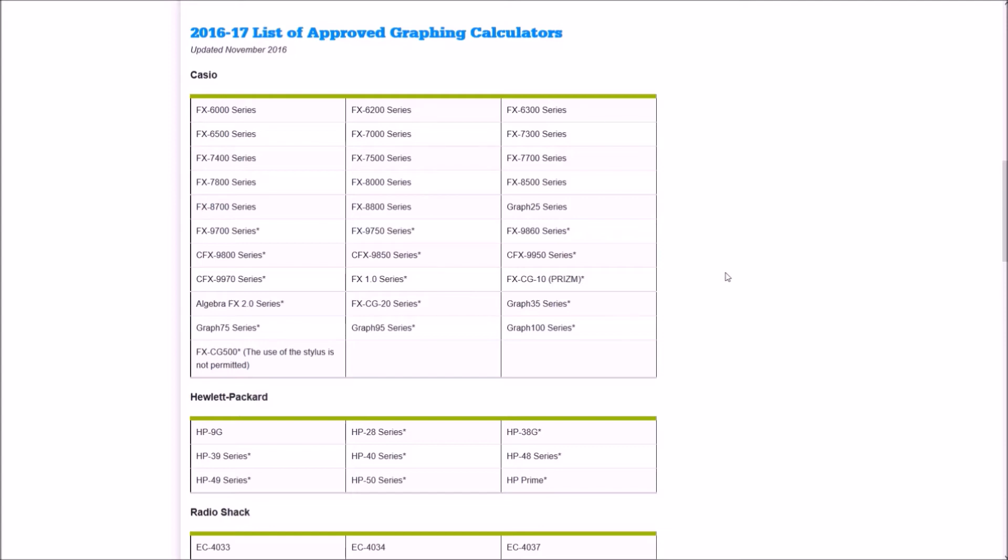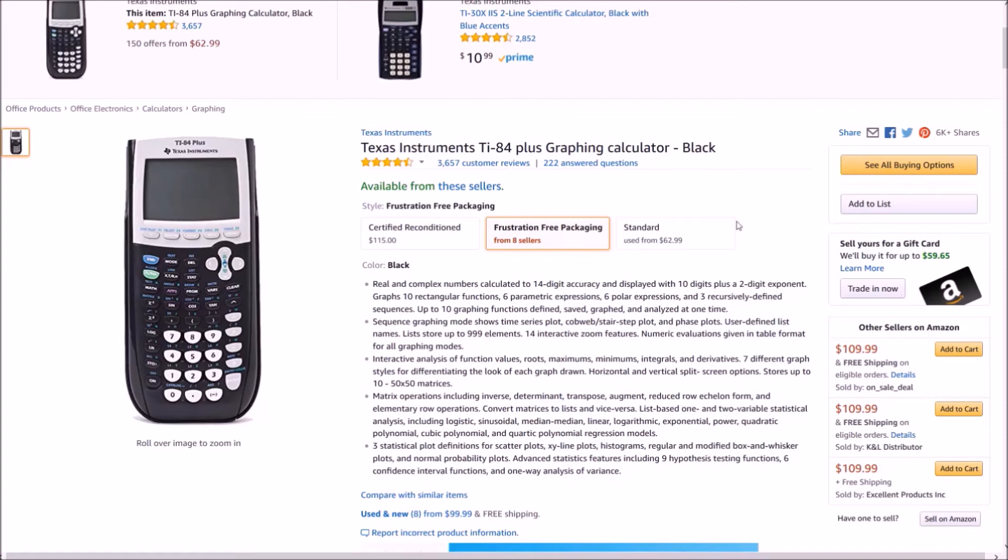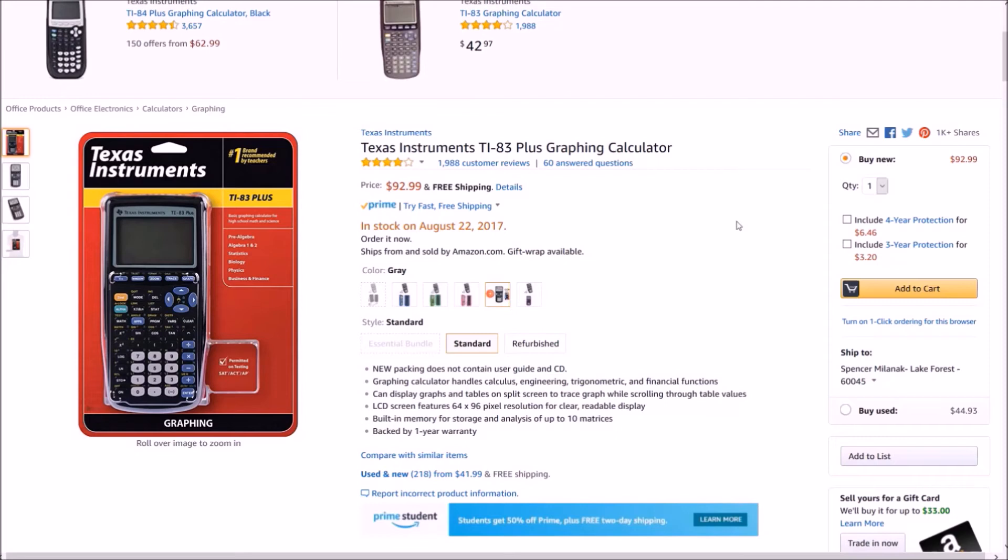All right, so let's run through my recommended calculators. The first one is the TI-84. This is the one that I used. It's very solid all around, not really much to say about it. You can't really go wrong by using this. Similarly, you can use a TI-83. It's basically the TI-84 just with a little less functionality, but it should be completely fine for the AP test.